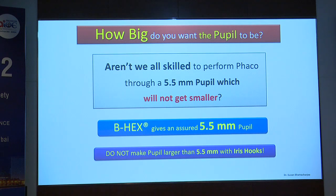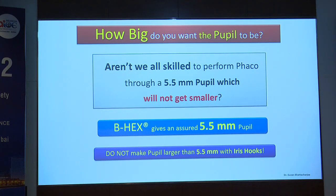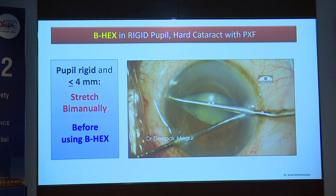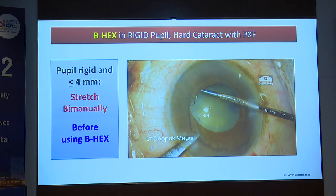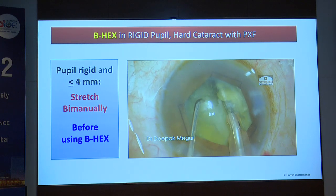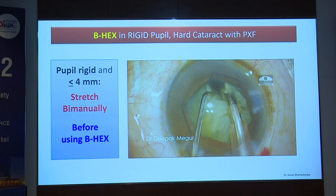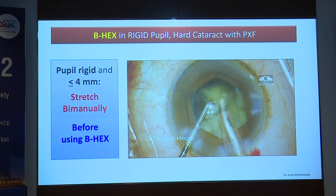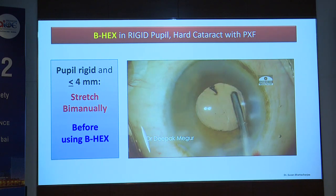How big does the pupil need to be? A pupil not smaller than 5.5mm is sufficient for surgery. We do a 5mm capsular access and 5.5mm is all that is needed — even for the hardest cataract, a 5.5mm pupil is enough. A larger pupil is only psychological. With the B-hex, a rigid pupil is stretched to 5.5mm and even a hard cataract can be dealt with by chopping into smaller fragments. Your working space is exactly what you need.